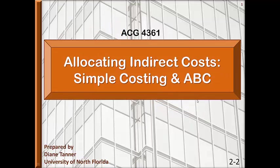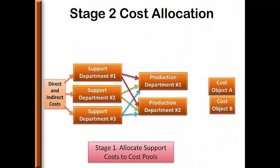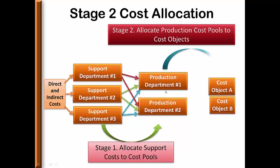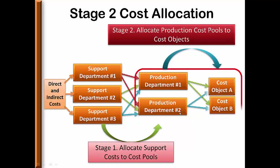Welcome to Cost Accounting. This video will cover allocating indirect cost using simple costing and ABC costing. This process is stage two of the cost allocation process. Recall that stage one allocates support cost to the production departments, and these production departments will be our cost pools that we allocate to the cost objects. Each of the cost pools gets distributed to each of the cost objects.